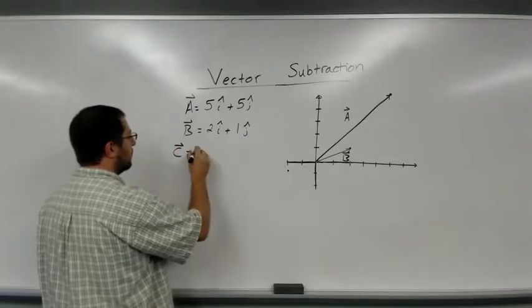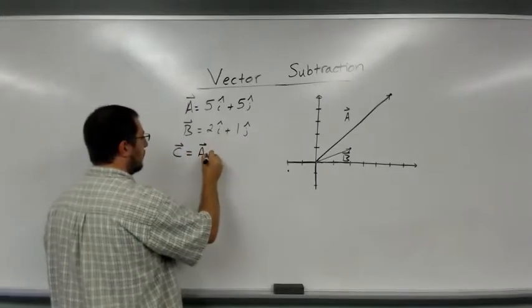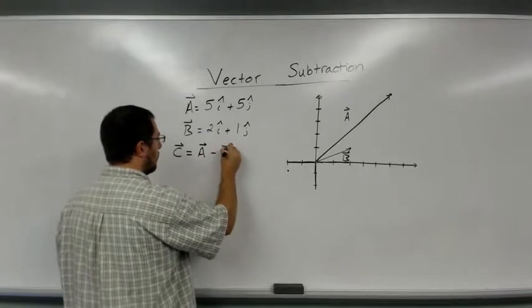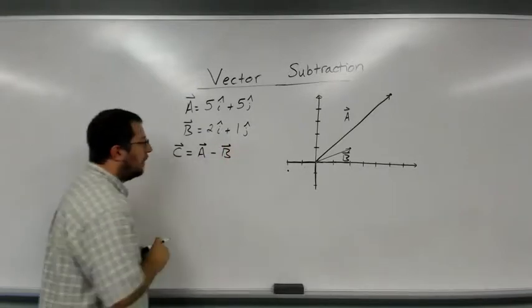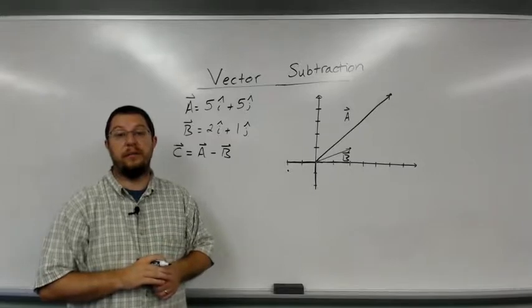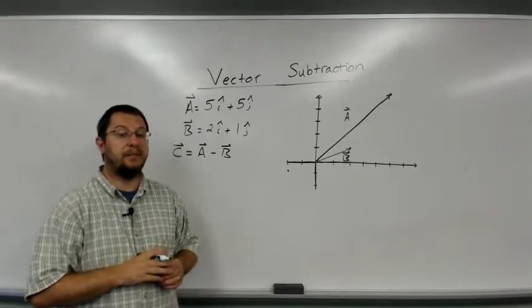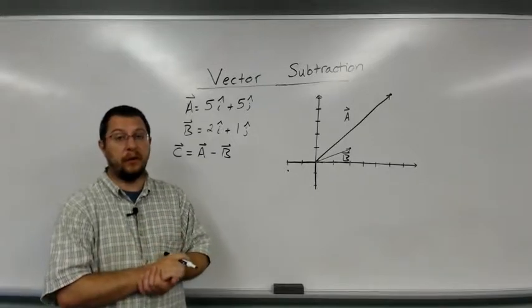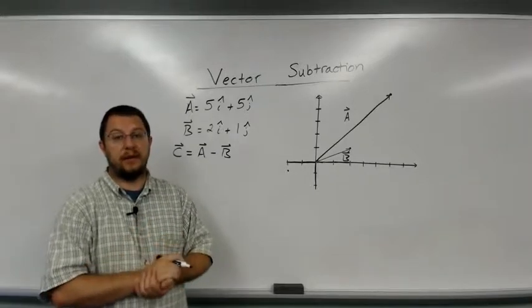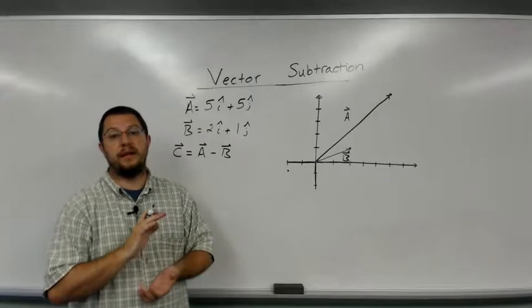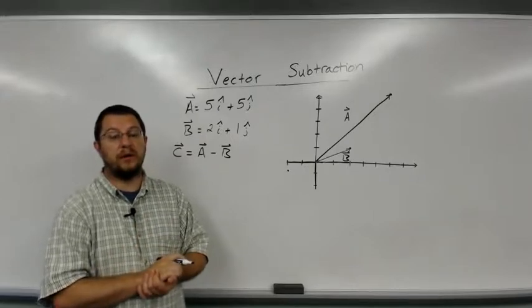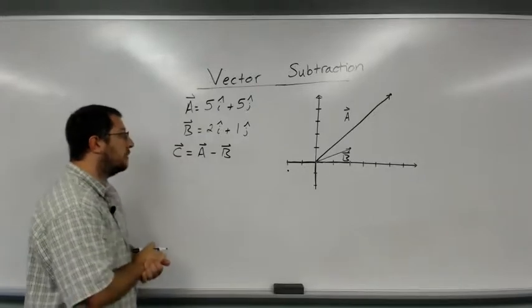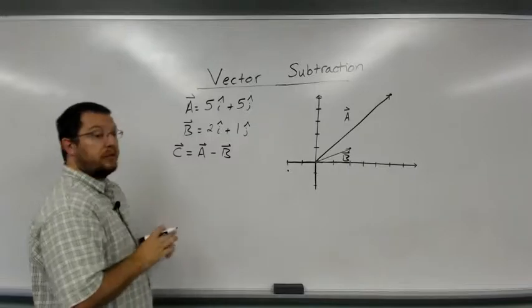So my question is if I want to create a new vector c by the subtraction of b from a, or a minus b, what are the components going to be, what is the magnitude going to be, and what is the angle or direction of the vector going to be. So these are the questions we can ask.